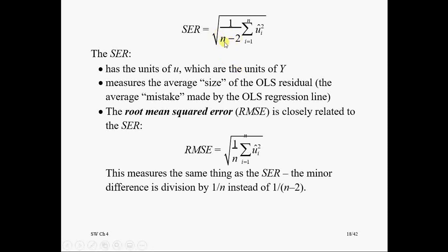N minus 2. If we divide it by n, it is called root mean square error. You have u_i squared, it's sum of squares of error, and you divide it by n. So this is mean square error, and then you take its root. It is called root mean square error.